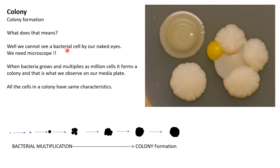We cannot see a single bacterial cell with our naked eyes — we need a microscope. However, we can study bacterial cells through bacterial colonies. When we provide sufficient nutrients, moisture, and temperature and inoculate a media with a particular bacterial culture, we see it growing as colonies on the agar plate. Bacteria multiply into millions of cells, and those millions of cells form a colony — that is what we observe on our media plate.